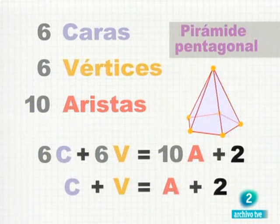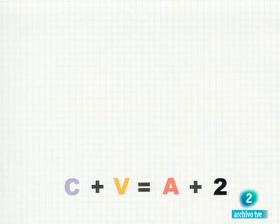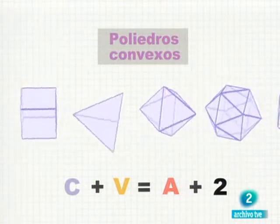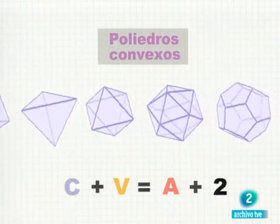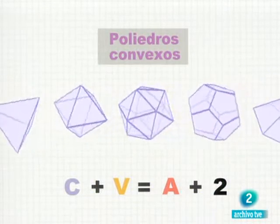Vaya, otra vez las caras más los vértices es igual al número de aristas más dos. Y esto ocurre con cualquier poliedro convexo. Euler fue el primero, no solo en darse cuenta de esta relación, sino en demostrar que sería así con todos ellos.